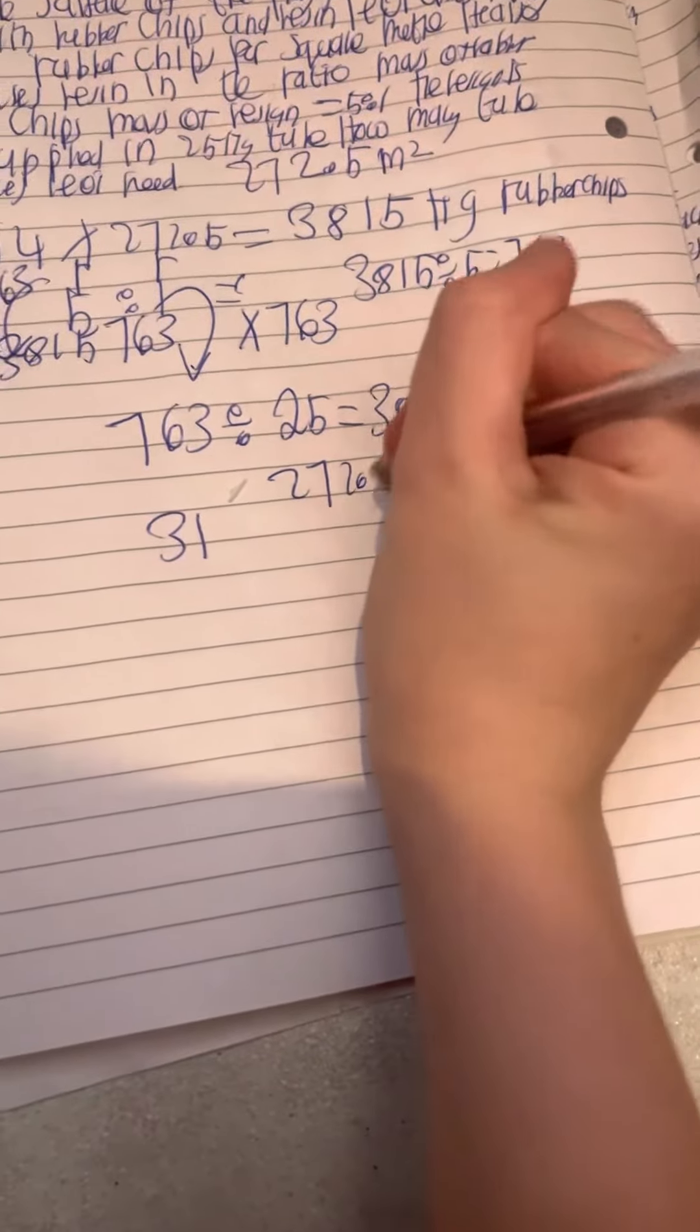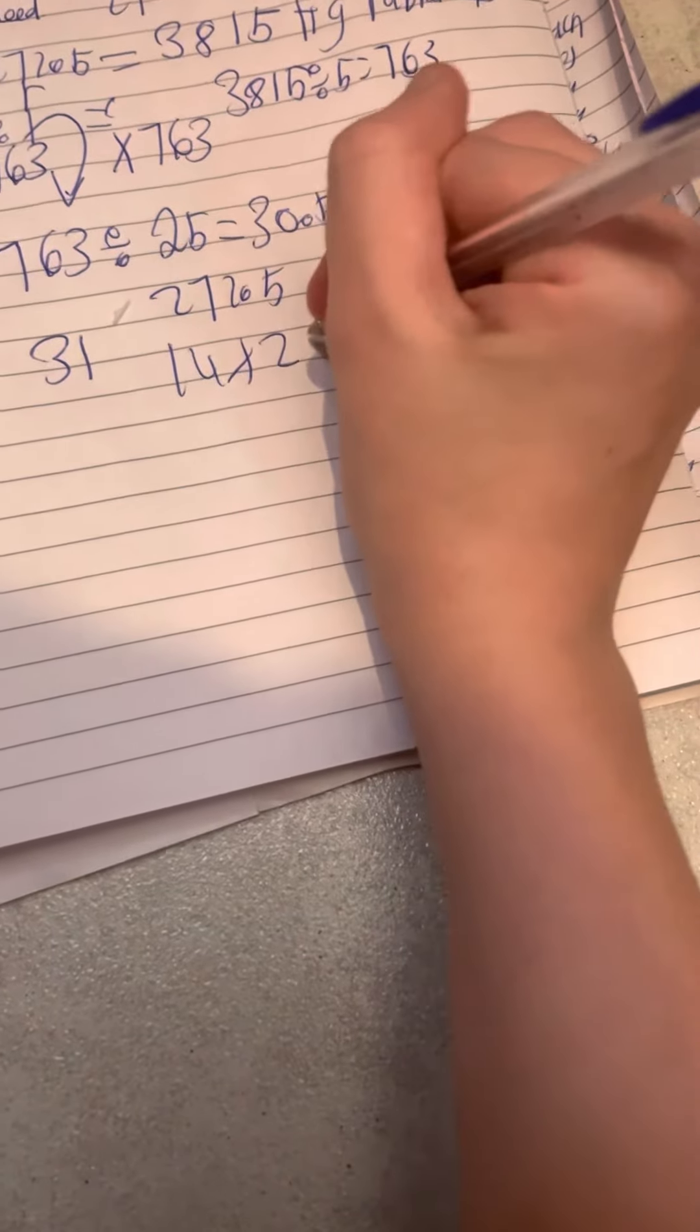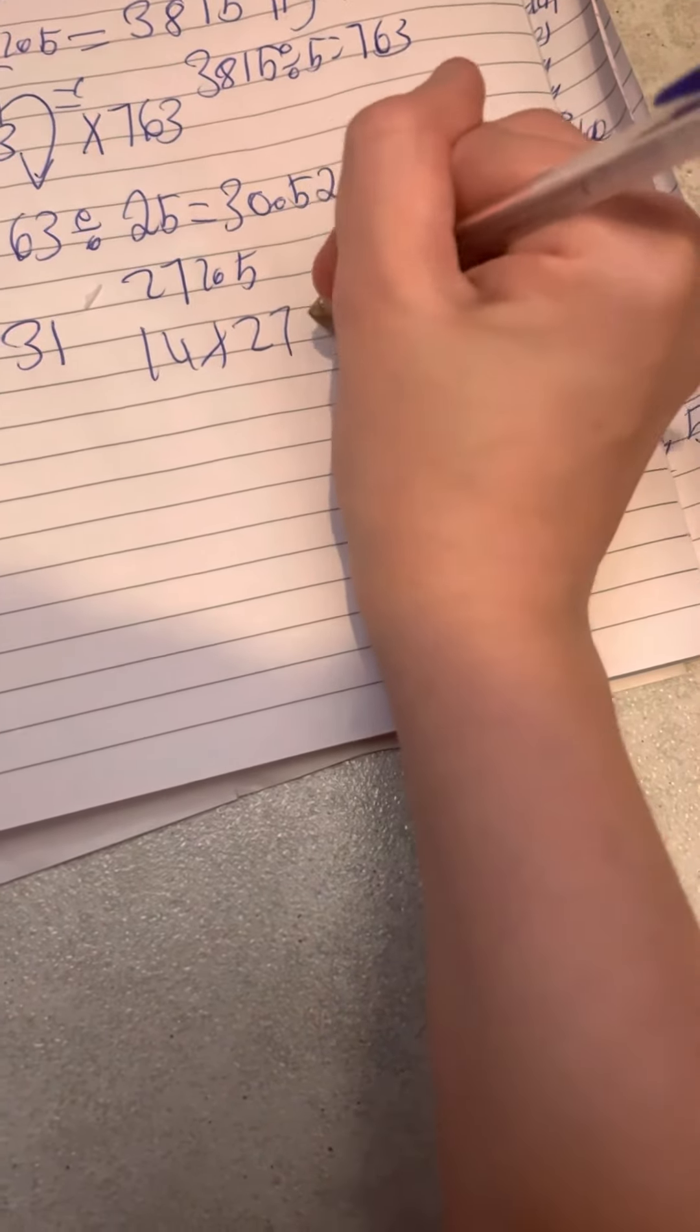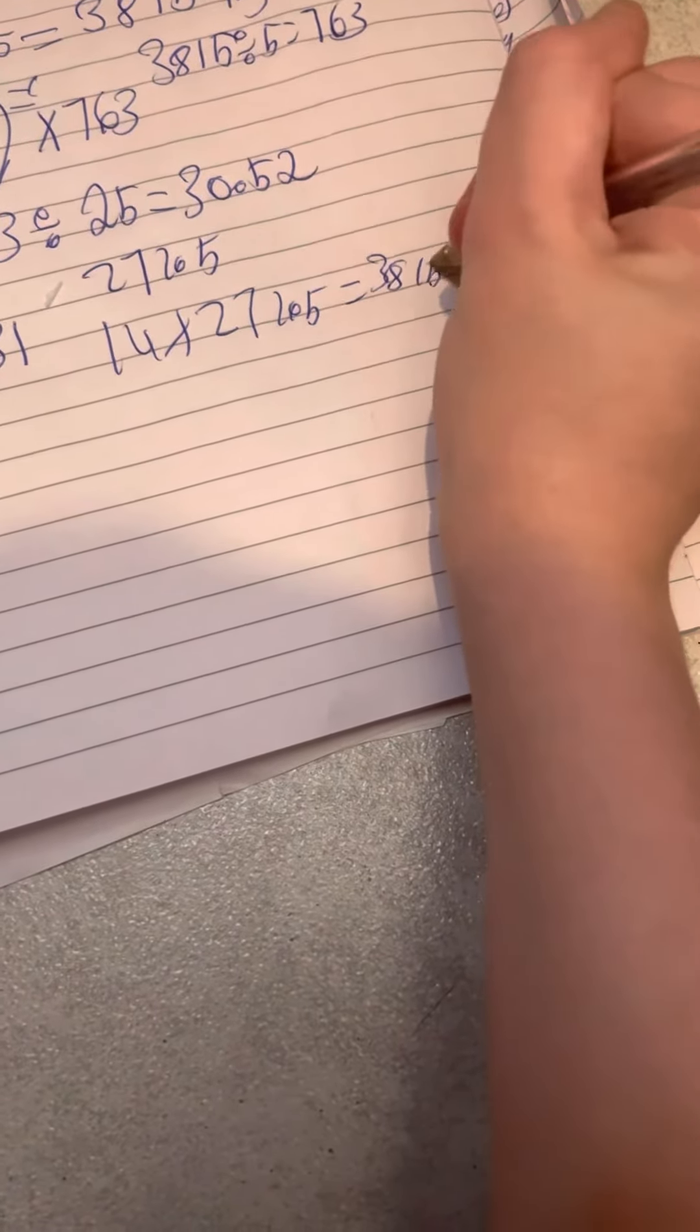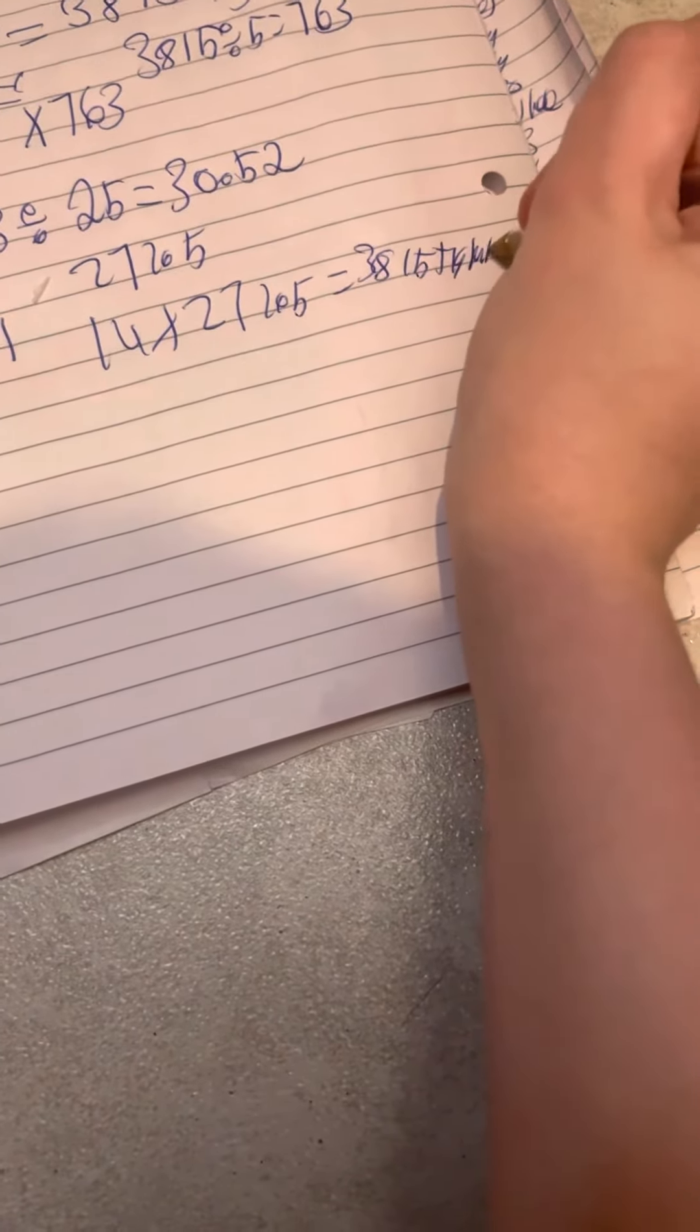So here we need to use the area from the previous question, so it's going to be 272.5. So if we do 14 times 272.5, that will give you 3815kg of rubber chips, not rubber bands.